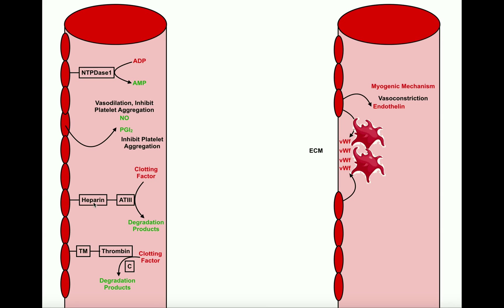There are also a couple of proteins anchored on the membrane of healthy endothelial cells. One of them is thrombomodulin, which binds a protein called thrombin. In the presence of another serum protein called protein C, it changes the function of thrombin — that's why it's called thrombomodulin, because it modulates thrombin's function. Normally thrombin causes blood clots by converting fibrinogen into fibrin, which is part of coagulation. However, when bound to thrombomodulin in the presence of protein C, thrombin instead breaks down clotting factors into their degradation products, meaning less clotting in areas with healthy endothelial cells.